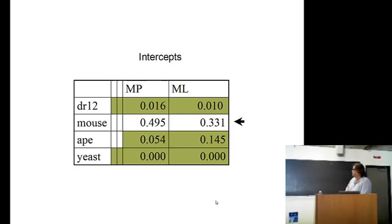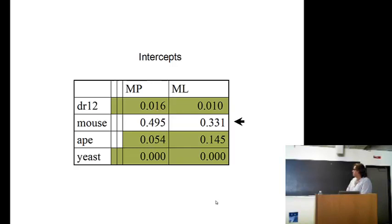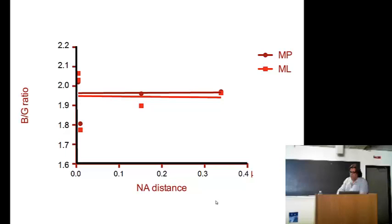And in this case, half to one-third of the genes are bad relative to the good. And this is what the graph looks like when you graph nucleotide distance to the bad to good ratio. This is strange because what this means is that the genes aren't sorting into bins. They're not sorting into, I agree with this tree or I agree with that tree or I agree with that tree. They are sorting into three different bins, but they're not sorting into one bin in particular. And what this means, if you look at the numbers, there are 370 genes that support the topology on the left, 395 that support the topology in the middle, 354 that support the topology on the right, and the orange numbers are those with significant incongruence length differences. And what this means is that you're getting three categories of signal coming from the genes of this dataset.